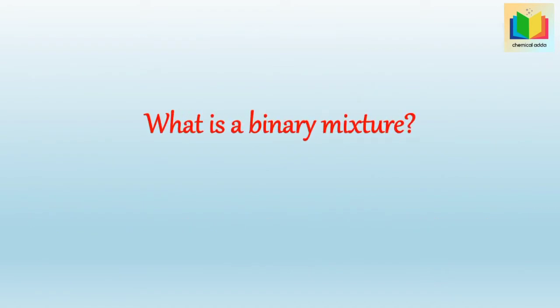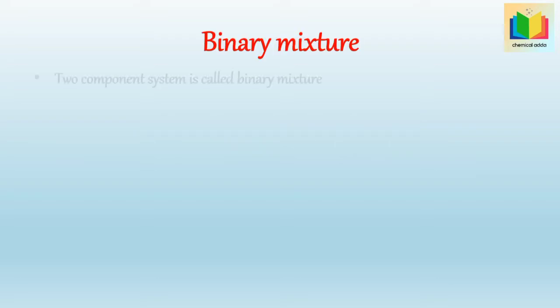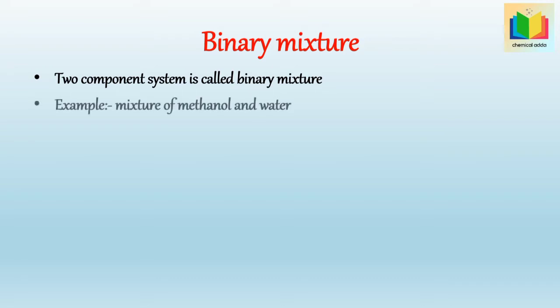What is a binary mixture? A two-component system is called a binary mixture. An example of a binary mixture is a mixture of methanol and water — it is a binary mixture as it consists of two components, that is methanol and water.